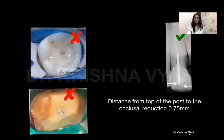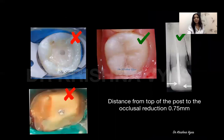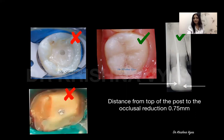What is the remedy? Here is one tip: never expose the head of the post. Always cover the head of the post with a core material of at least 0.75 millimeters. Even if you are opting for a full crown, always make sure there is at least 0.75 millimeters between the head of the post and the crown prepared occlusal surface. By doing this, we avoid stress concentration on the head of the post, minimizing catastrophic fractures or damage of the fiber post.